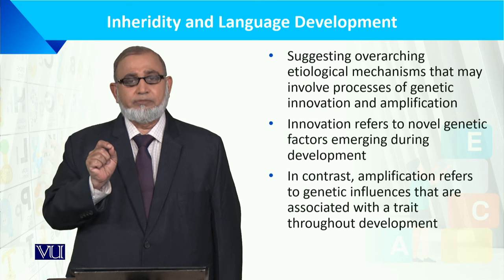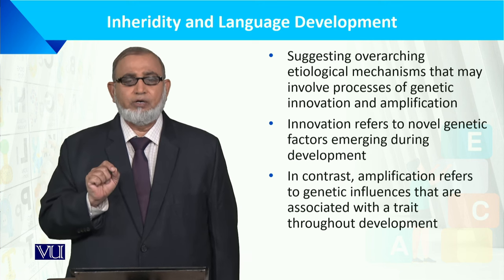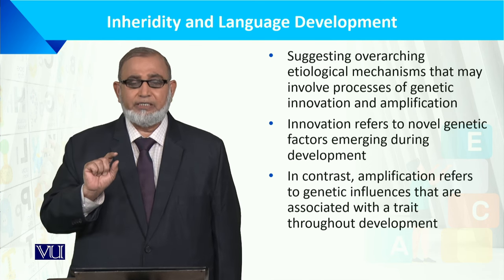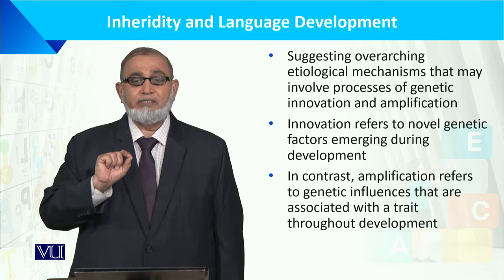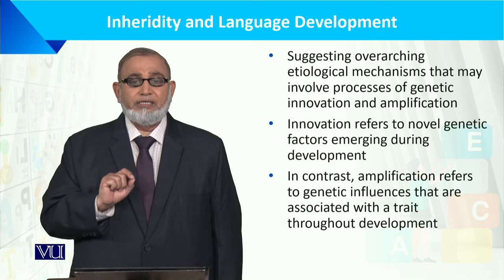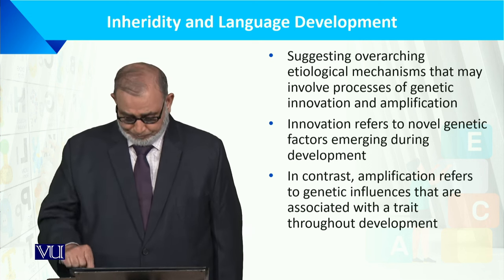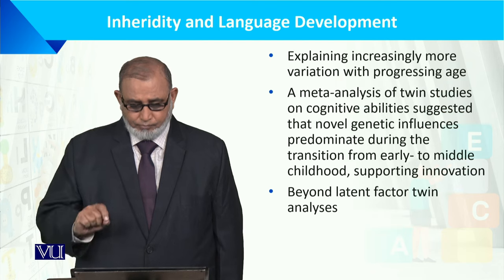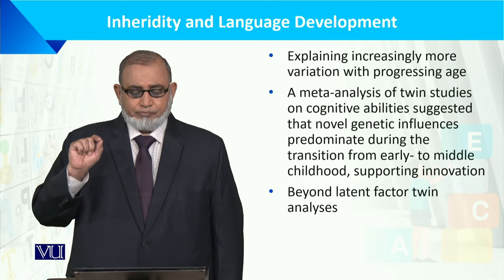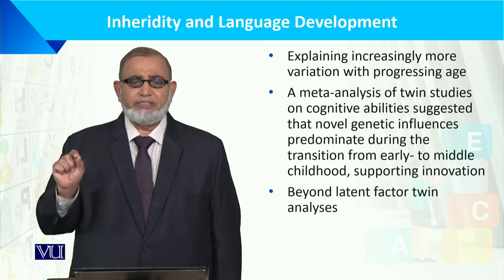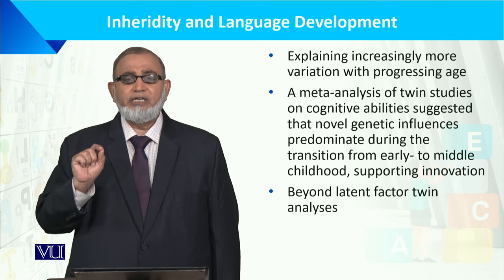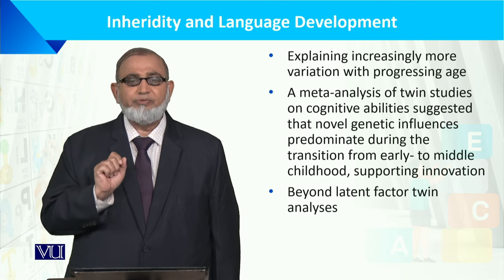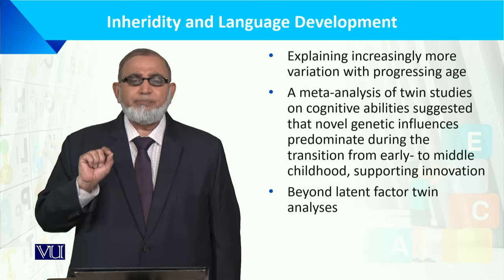اور دوسروں کی نسبت جلد بولنے والے بچوں میں جب inheritance کے ساتھ environment بھی شامل ہو جائے تو language جلد polish ہو جاتی ہے — speed، pronunciation اور correctness واضح ہو جاتی ہے۔ inheritance کا بنیادی role ہے اور inheritance میں بھی variation ہے جو child to child فرق ہوتی ہے، حتیٰ کہ ایک ہی family کے siblings میں بھی فرق ہوتا ہے۔